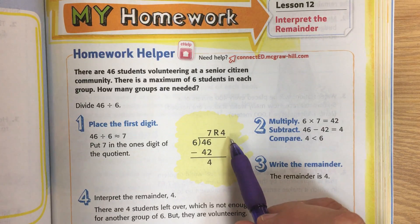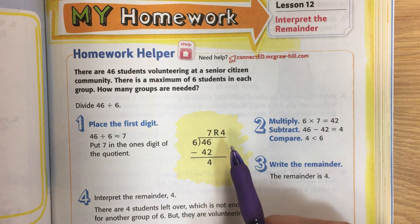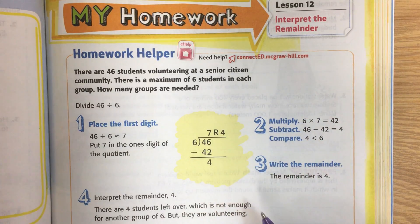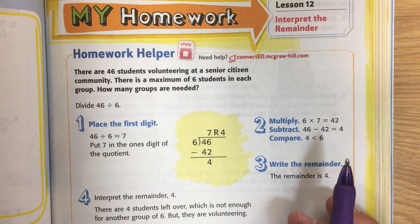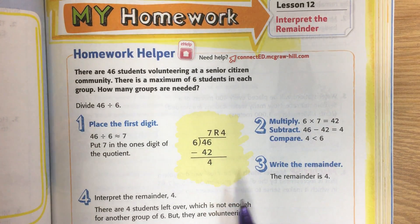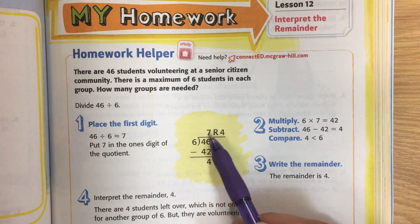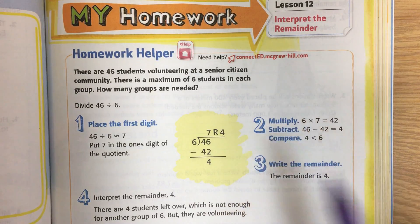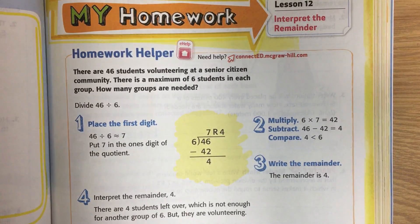The remainder four means there are still four extra students. They're not just going to do nothing — they're all volunteers. So we're going to go ahead and make a group out of them too. The question says how many groups are needed. There are seven groups with six people in each one, but we have four more students, so we'll make another group. The answer is going to be eight groups, even though one has less than the other seven.